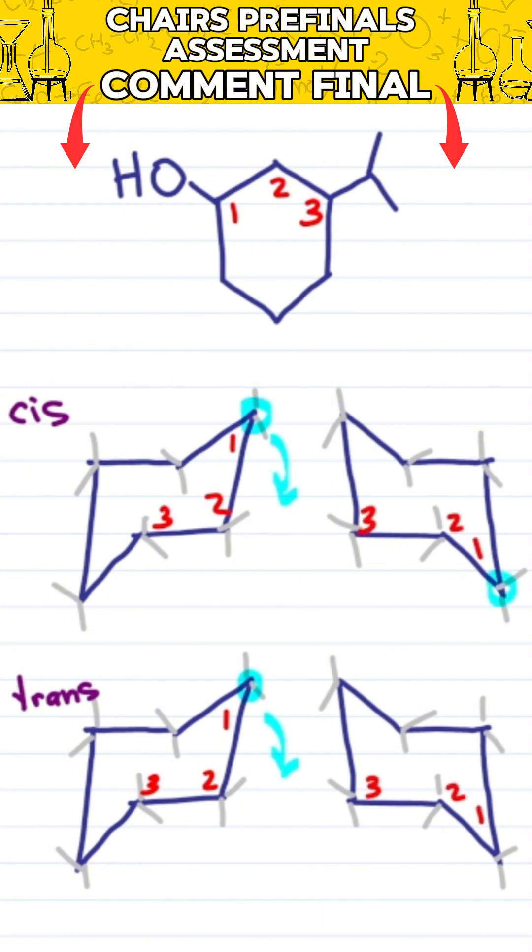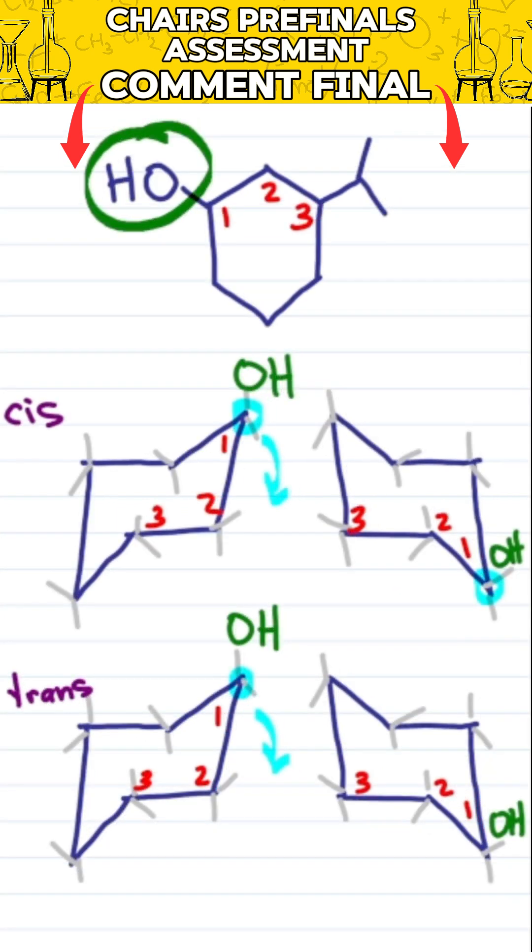Do it again for trans. Here's the shortcut, fill them in at the same time. That's an OH on one which I'm choosing to put up for cis or trans and it stays up on the ring flip. An isopropyl on three, I'll put up for cis and down for trans.